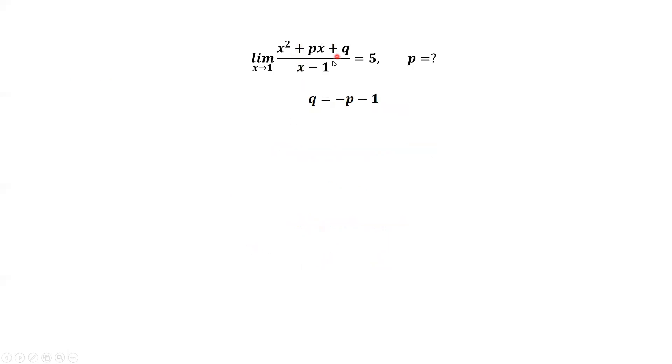From this limit, we can replace q by negative p minus 1. Grouping and factoring the right-hand side, the common factor is x minus 1.